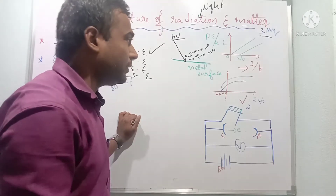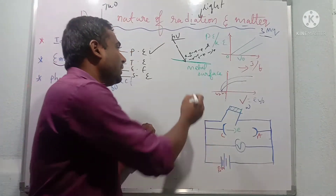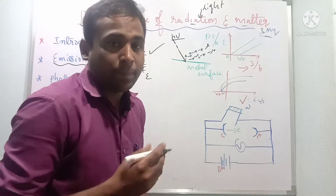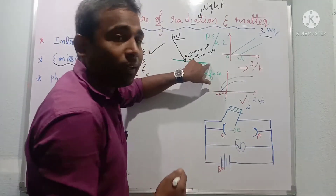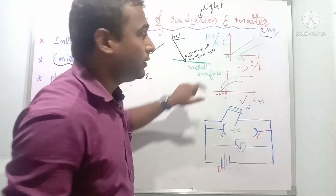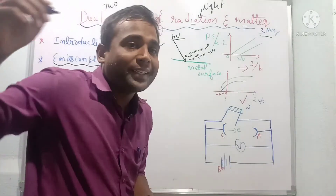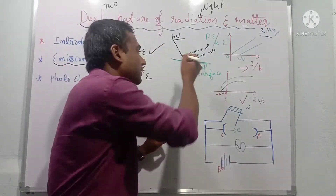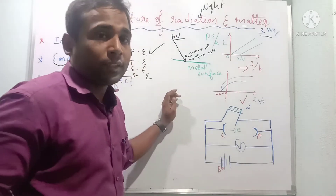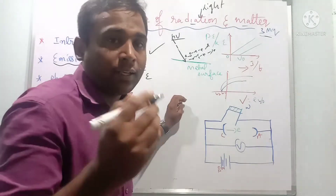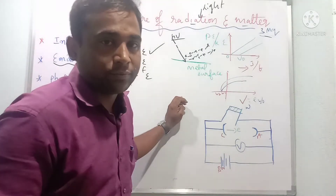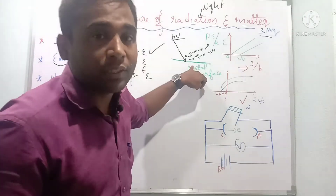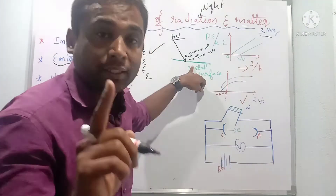The electric current produced depends upon the nature of the given material and the intensity of light falling on the metal surface. The best conductors of electricity — copper, silver, and aluminium — show that nature plays a very important role in the photoelectric effect.